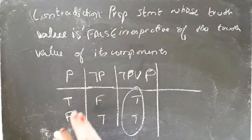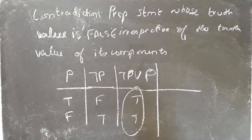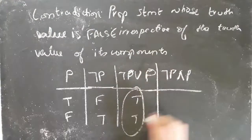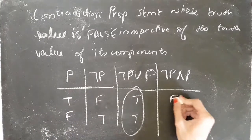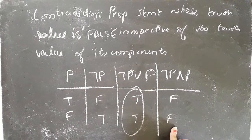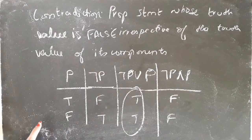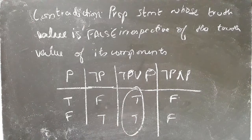A contradiction is a statement whose truth value is always false, no matter what the truth values of its components are. For example, NOT P and P: for the first case it is false, and for the second it is also false. Its truth value is always false, so it is a contradiction.